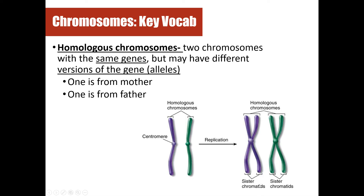We've talked about sister chromatids before when we talked about mitosis, but we're going to revisit that because it can be confusing. Sister chromatids refer to each individual chromatid, but if we're talking about the two together — since they share the same genes — we call them homologous chromosomes.